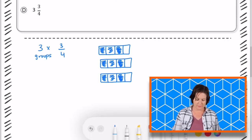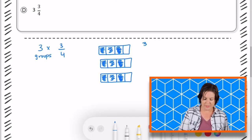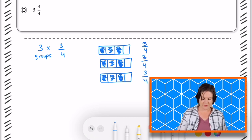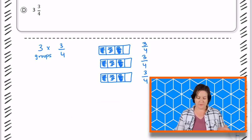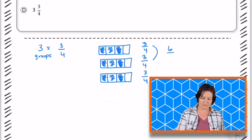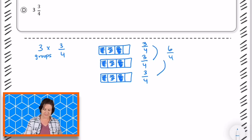So now, that means I have 3/4 here, 3/4 here, and 3/4 there. 3/4 plus 3/4 is 6/4, and 6/4 plus 3/4 equals 9/4. Is that an answer choice?